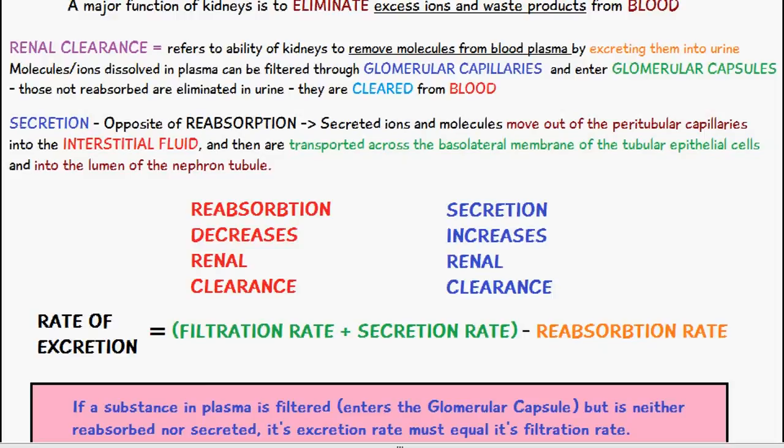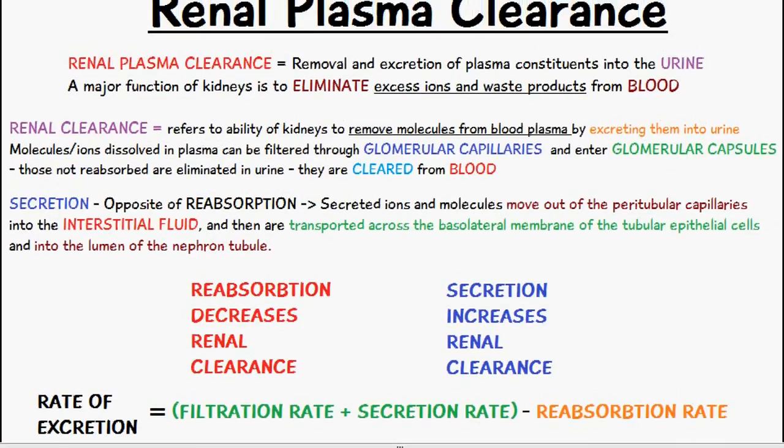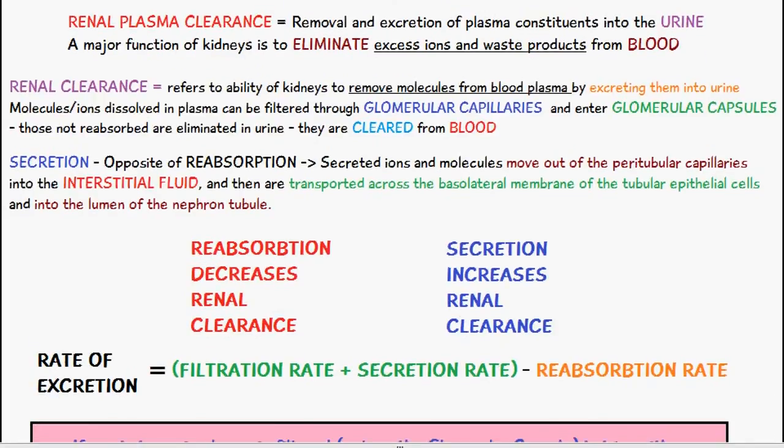Reabsorption decreases renal clearance, and secretion increases renal clearance. Looking at the definition again — renal clearance is the removal and excretion of plasma constituents — if we are reabsorbing a lot of these molecules and ions, renal clearance will be lower because we're not removing them. Secretion, on the other hand, increases renal clearance because we are actually eliminating these plasma constituents.